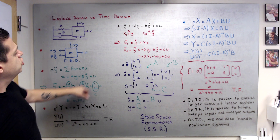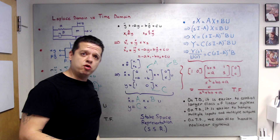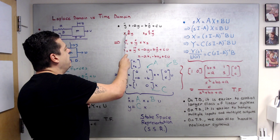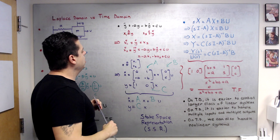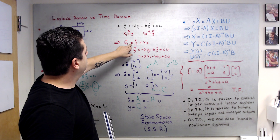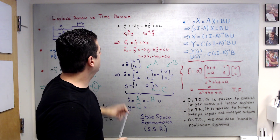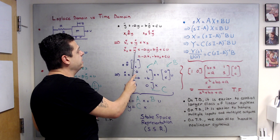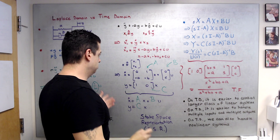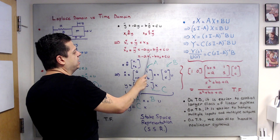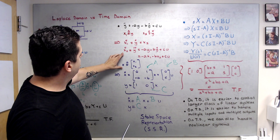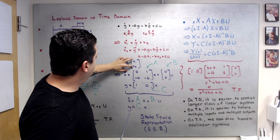Now the Laplace side is covered. Rewriting the equations of motion, I would like to formulate things in the time domain. For this purpose we define state variables: let x1 be the position Y, and x2 be the velocity, Y-dot. I want to write things in state space form, so first let's differentiate: x1-dot equals Y-dot, which is simply x2.